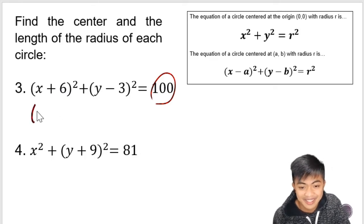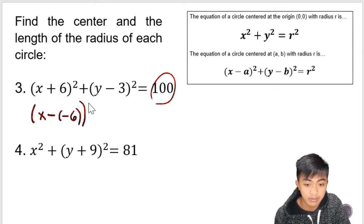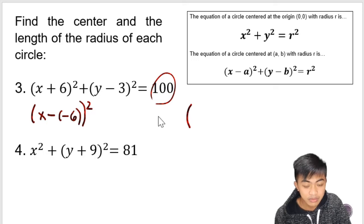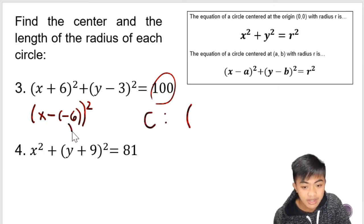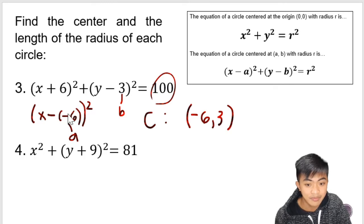So we can actually rewrite this in a way that it will look like subtraction — just watch. This will become x minus negative 6, because to be equivalent to x plus 6 we rewrite it as x minus negative 6. Why do we have to do that? Because what we need is a, and for us to get the x-coordinate it should be subtraction. Since this is now separated by subtraction, we can easily read: a is negative 6 and b is 3. So the center will be at (negative 6, 3).